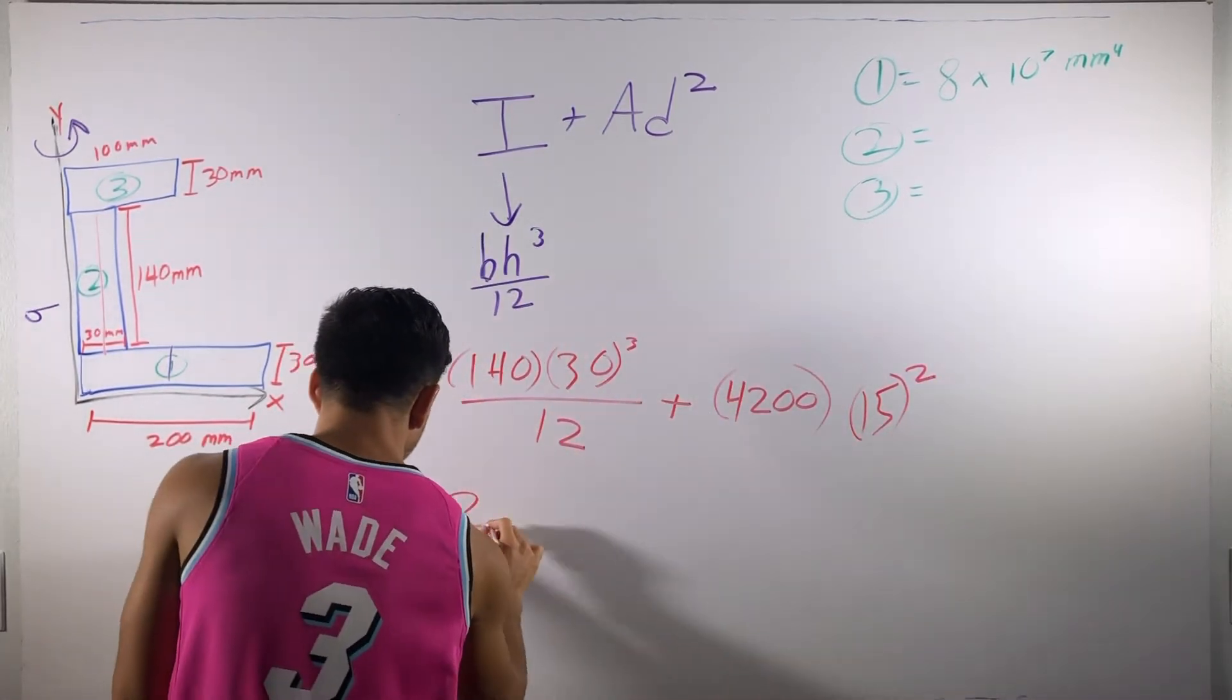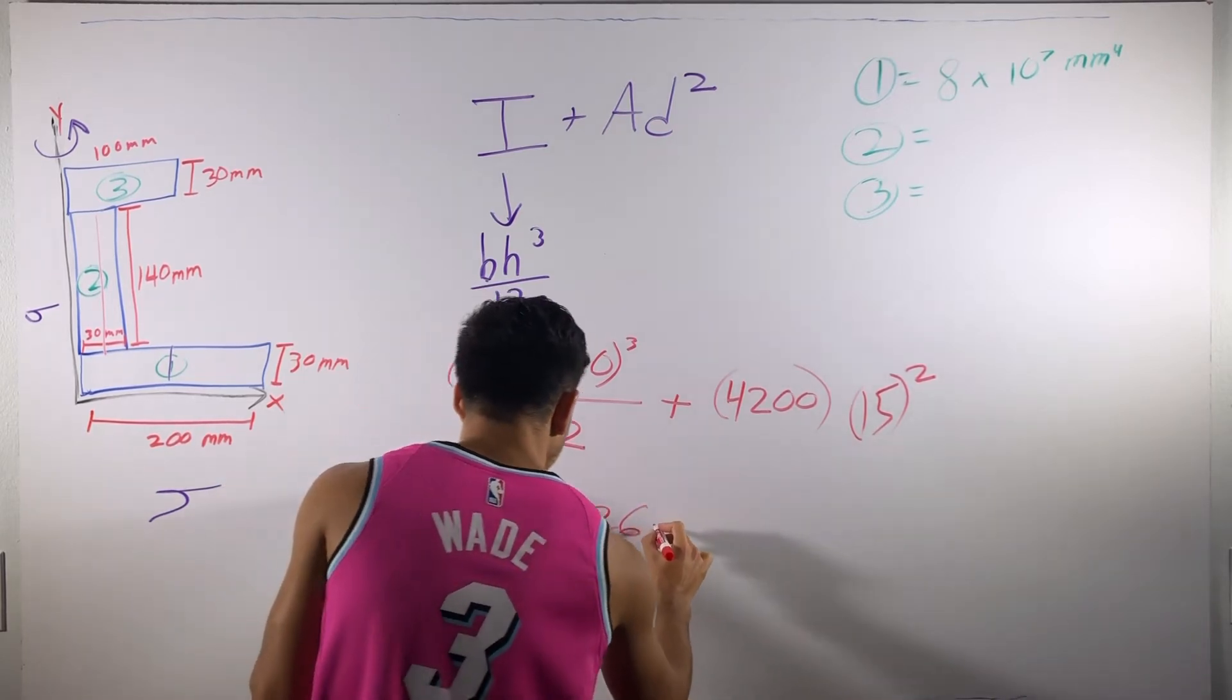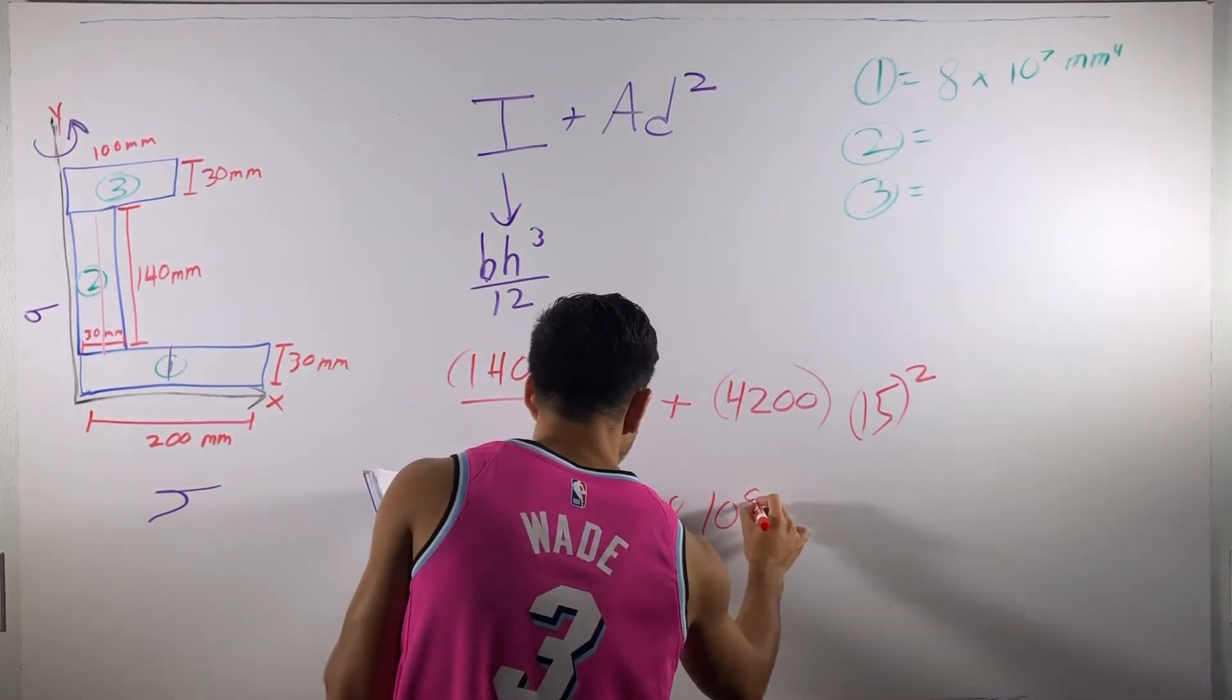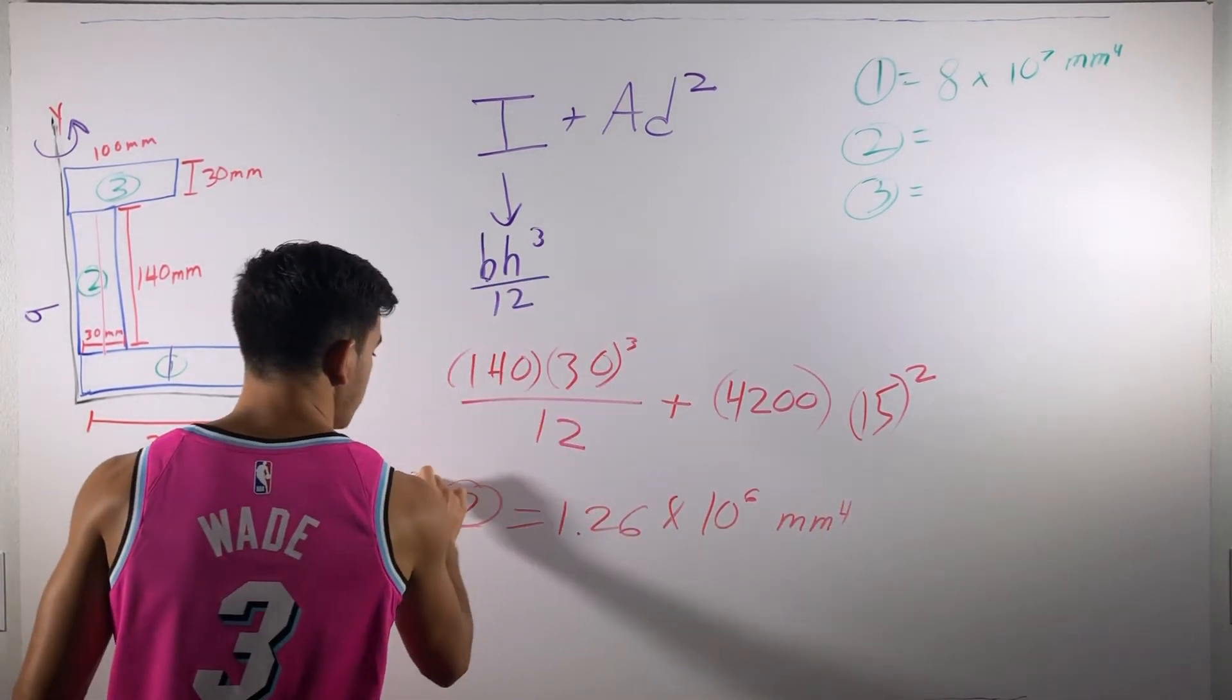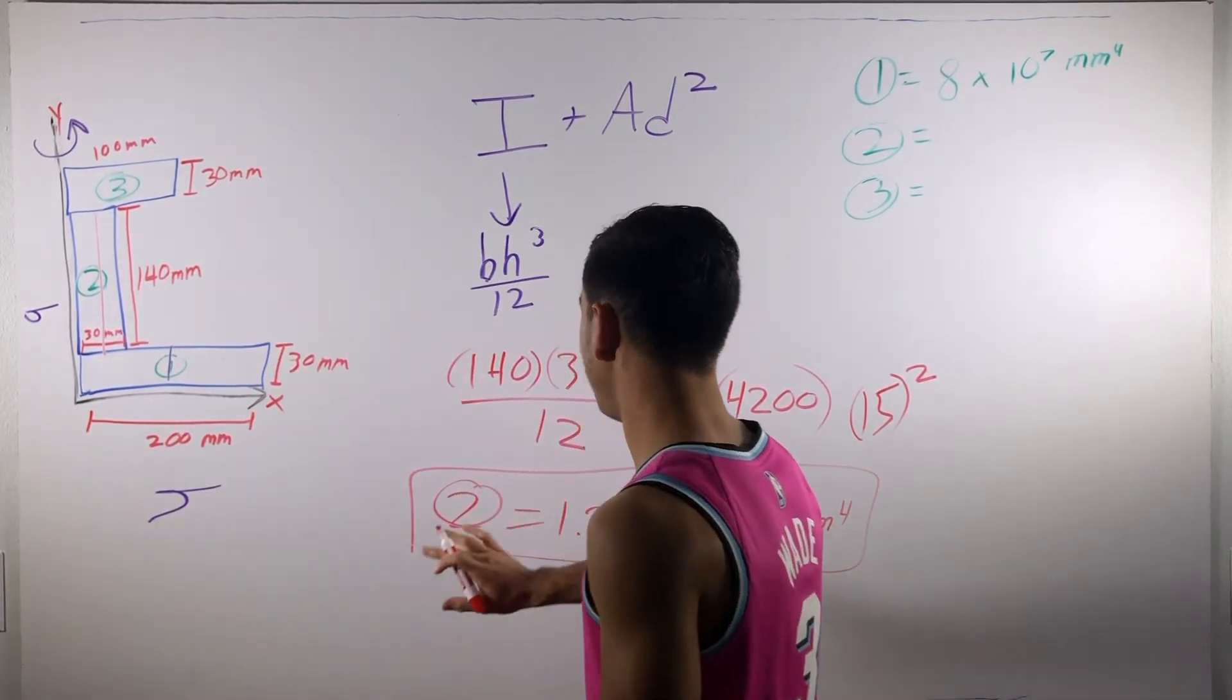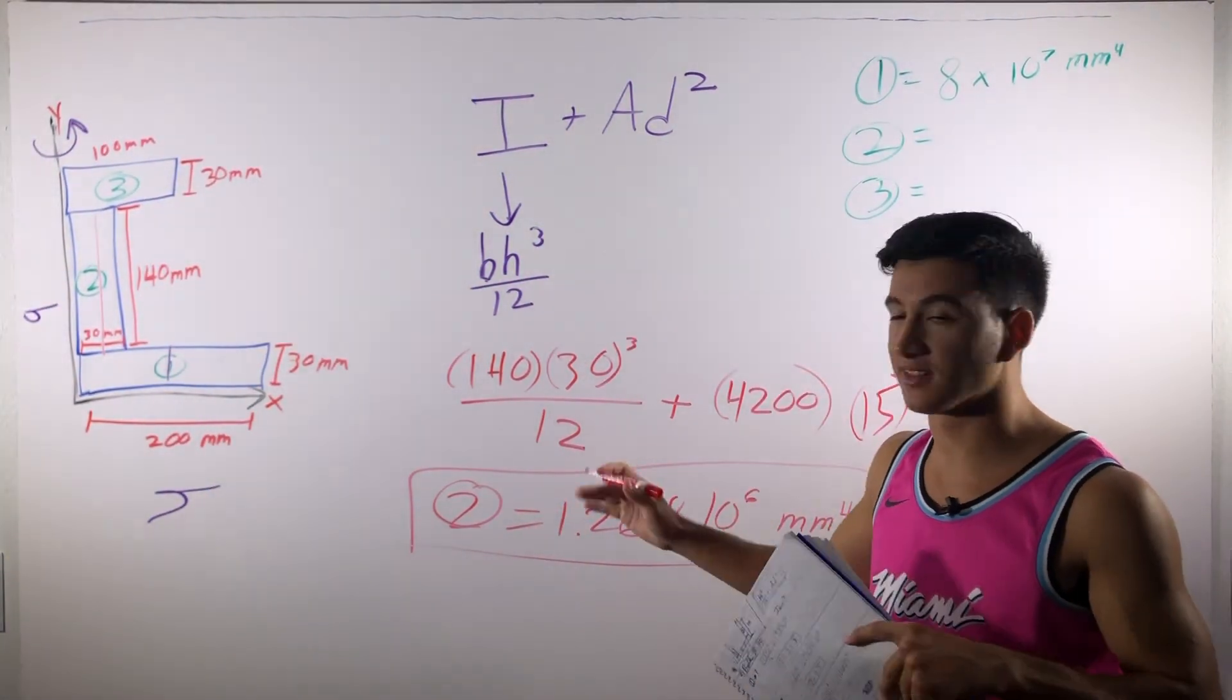So, the D is now just going to be 15 and square that. And then when you compile all this together, it's going to give you 1.26 times 10 to the sixth. And we'll add them all together. Let's clean this up and check out three.